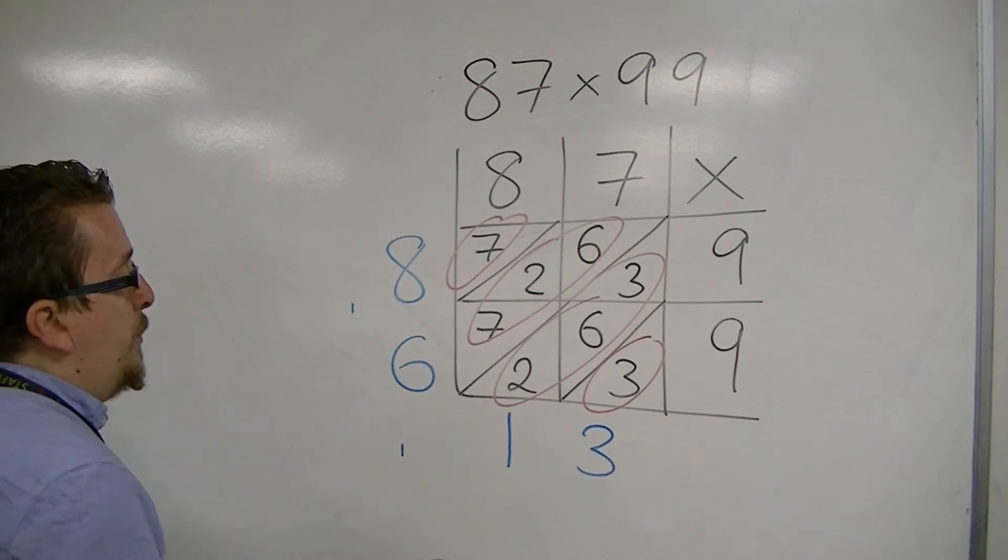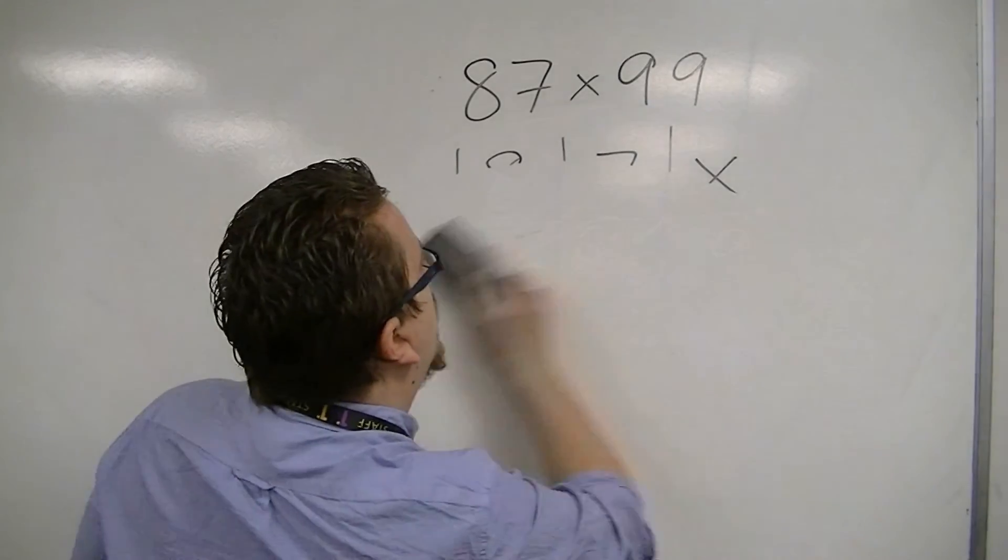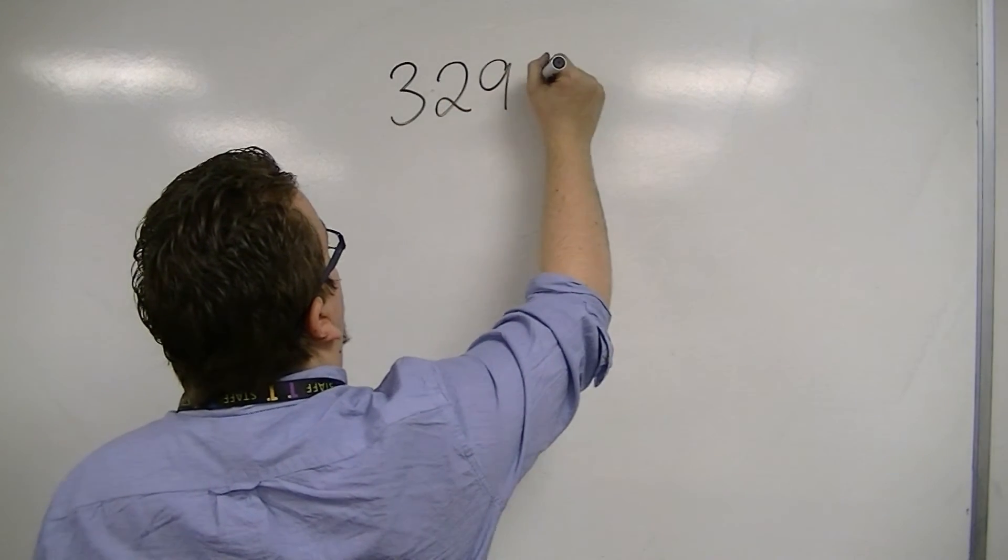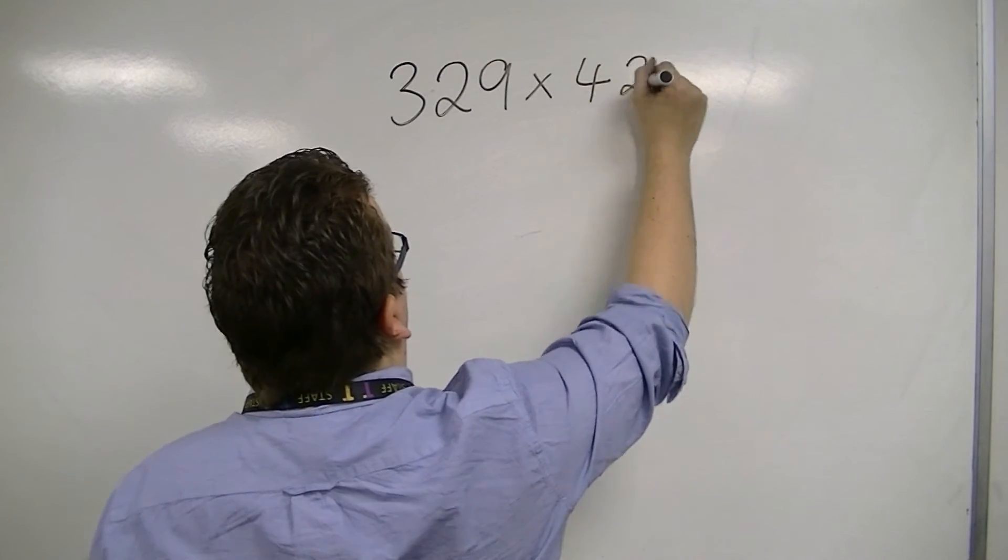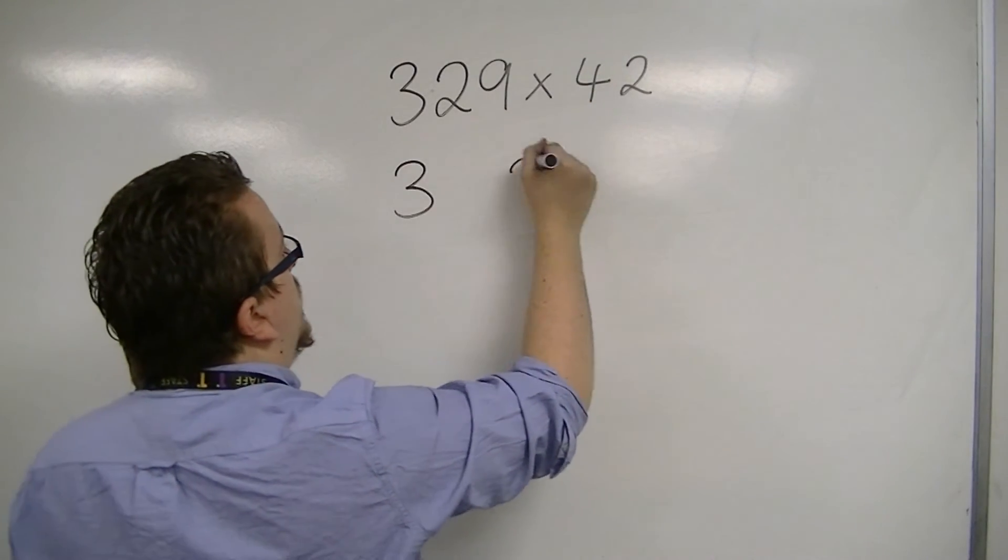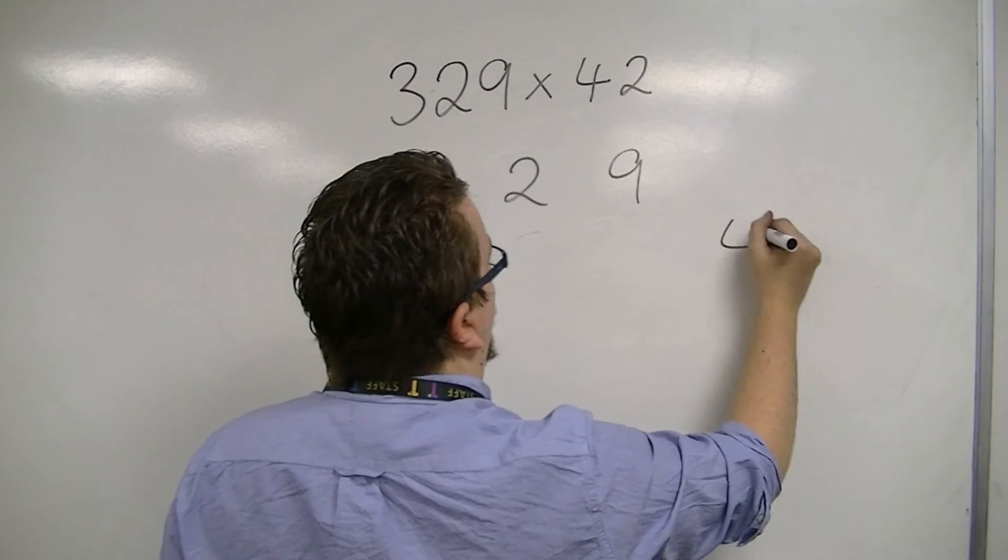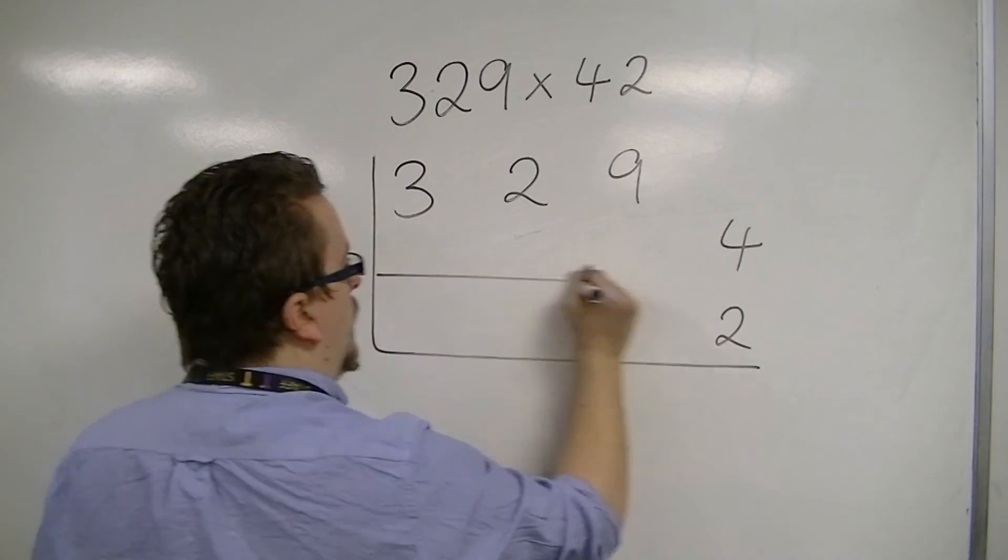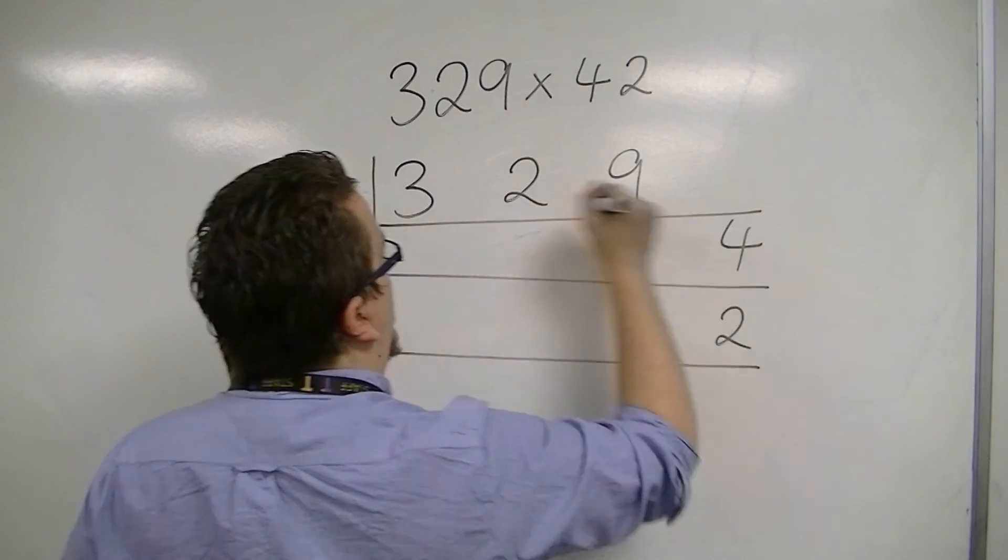If you wanted to extend this method to hundreds, for example, let's say we had 329 times 42. Then we can write 3, 2, 9, 4, 2. The grid gets a little bit larger.